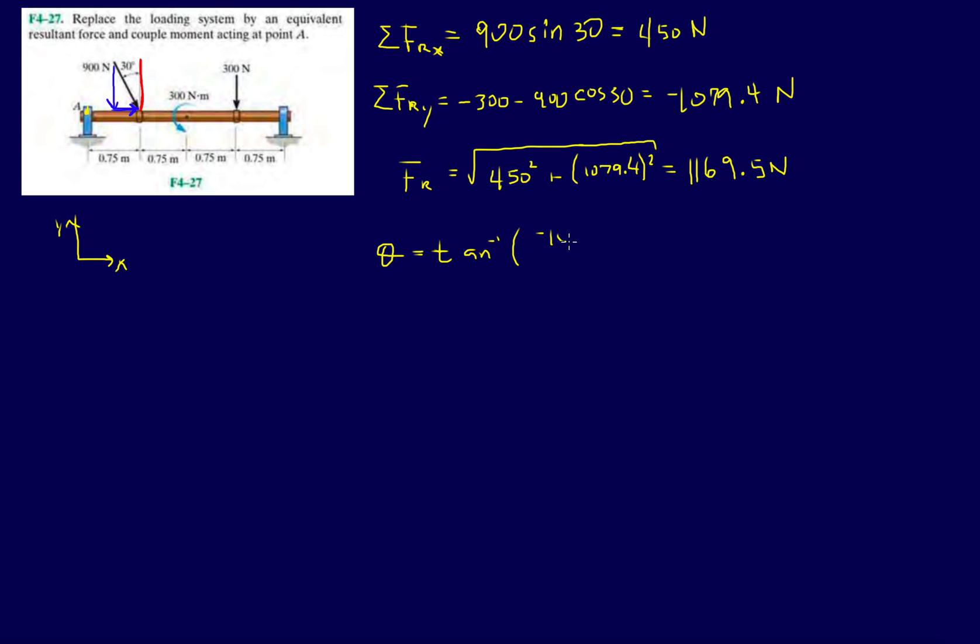Inverse tangent of minus 1079.4 over 450. So y over x. That gives us minus 67.4 degrees.